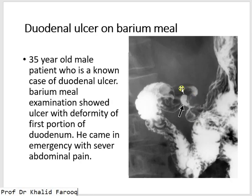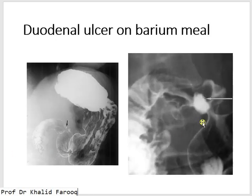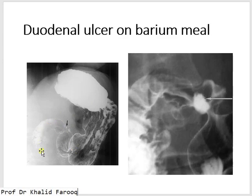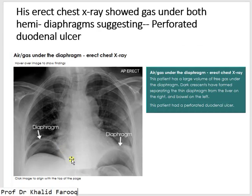Another patient shows an ulcer in the proximal portion, or first portion, of the duodenum — the duodenal cap — where the ulcer is seen and the proximal end is deformed. This patient also presented to the emergency with severe abdominal pain. In a magnified view, the duodenal cap is deformed, mucosal folds are thickened, and the ulcerated area shows contrast filling. In the main view we can clearly identify the ulcer, and here we have multiple examples of pneumoperitoneum — air under both hemidiaphragms.